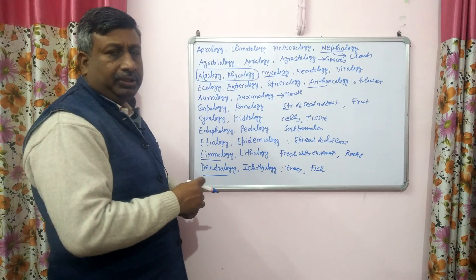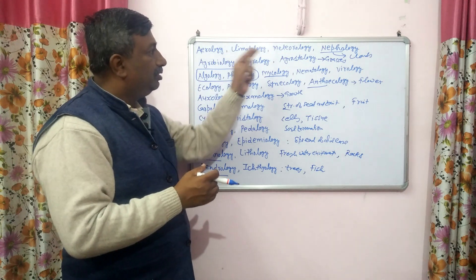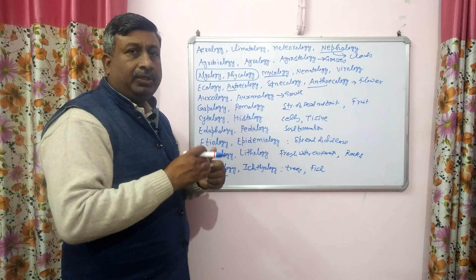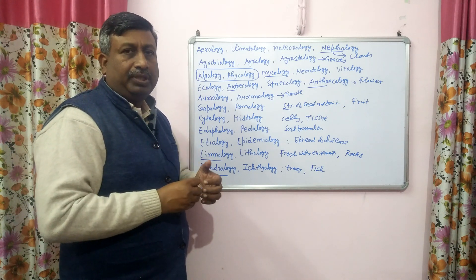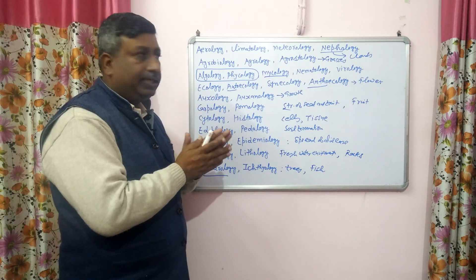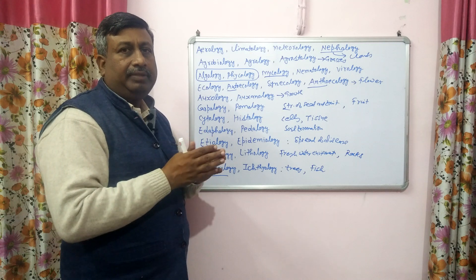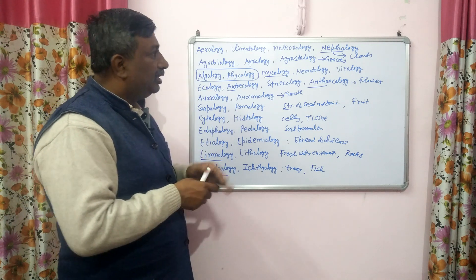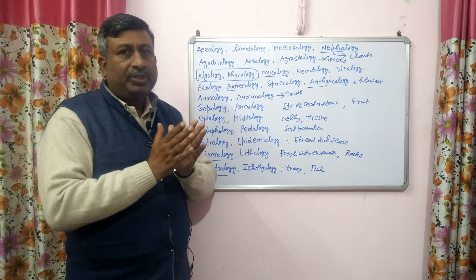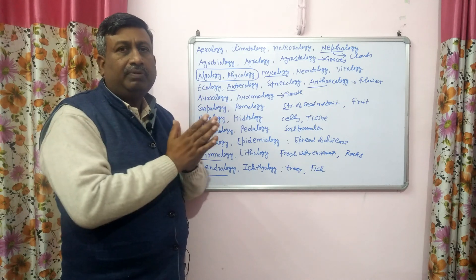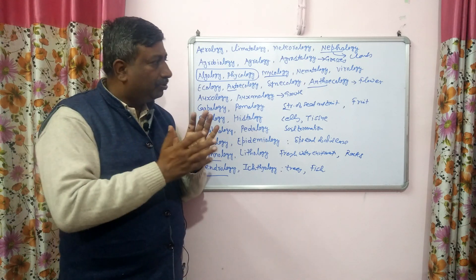There are other -ologies, and these are very common and generally asked in examinations, and some are confusing. For example, climatology and meteorology — there should be no confusion about those. Auto-ecology and syn-ecology are generally asked in examinations. Entomology and ecology are very common. If the prefix 'agro' is added to a word, it is related with the agriculture production system. These are the important -ologies you need to know — the different types of study done under agricultural science.